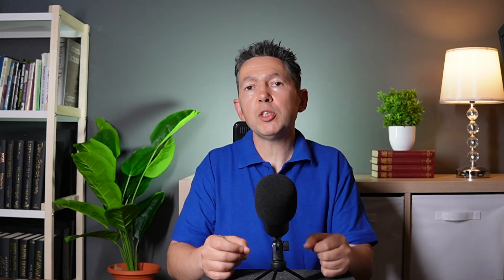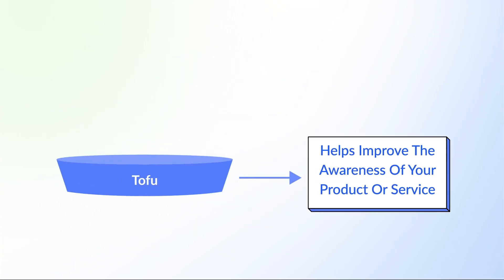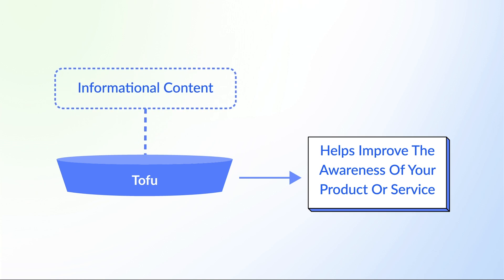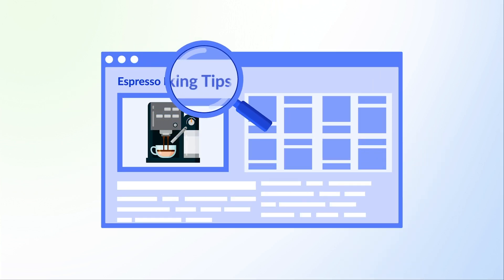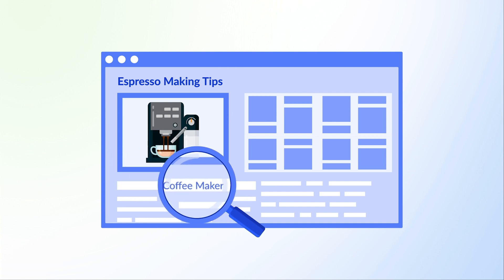Catering to your visitors' every need boosts your topical authority in the eyes of the search engine and increases trust in your brand — which ultimately leads to more conversions. This is why content on 'Espresso Making Tips' helps your transactional keyword 'Manual Espresso Coffee Machine in London.' TOFU content helps improve the awareness of your product or service by providing useful information related to your topic but not really about what you're selling — your Espresso Making Tips article can provide great tips and include a mention of the coffee machine you are selling.